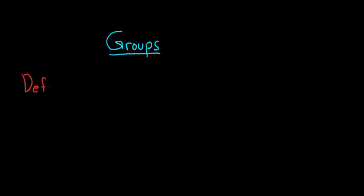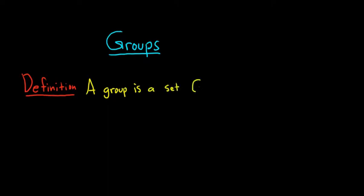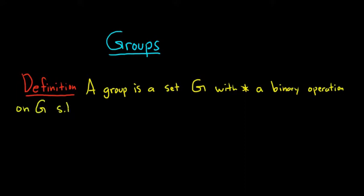So, definition. A group is a set G with star, a binary operation on G, such that the following three conditions hold. The first condition is that star is an associative binary operation. We often refer to this as the associativity property.